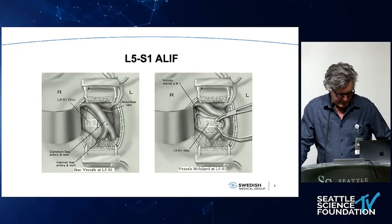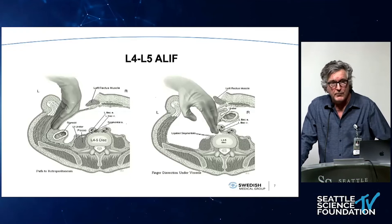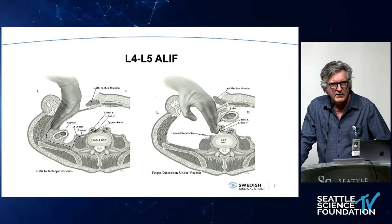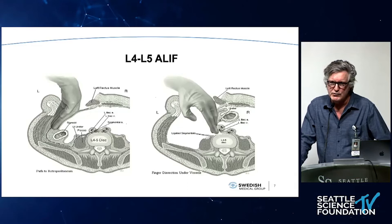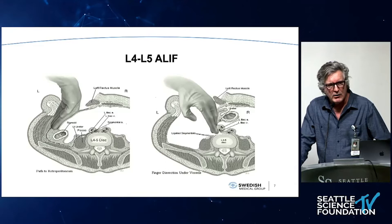At the 4-5 level, it's much more important that you divide the iliolumbar vein. This is the level where we see most of the injuries. If you're going to do a 4-5 ALIF, the majority of vascular injuries occur at this level, the most common one being venous. There's usually a small branch of the external iliac artery that arises and goes laterally, which can typically be treated with a small clip or bipolar cautery.